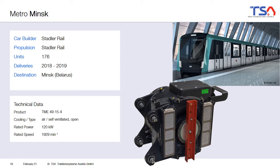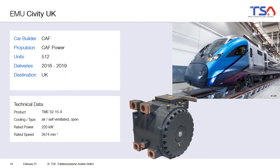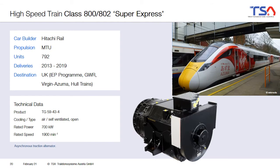It is up to the system designer to choose the cooling concept — Metro vehicles can be found with either concept. The self-ventilated open machine is used for a Metro, and in the picture you can see the filters. This cooling concept can also be used for EMUs, for example a CAF vehicle. In another application, this cooling concept is used for the generator of the high speed train Class 800-802 for the UK, which uses diesel generator power packs to supply the train with energy when overhead line power is unavailable, and the generator is equipped with self-ventilated open air cooling.